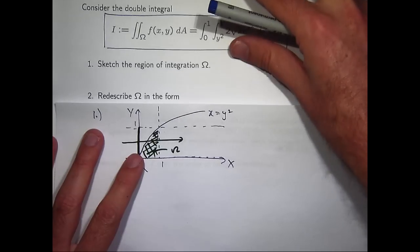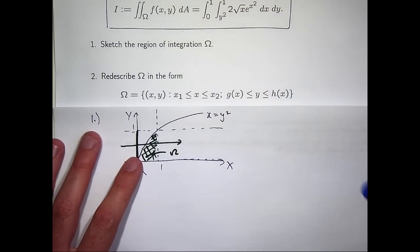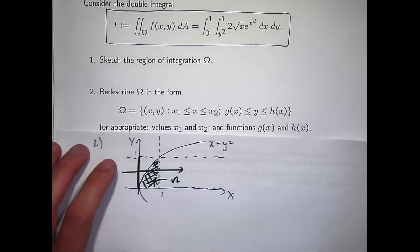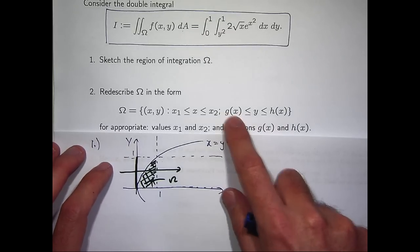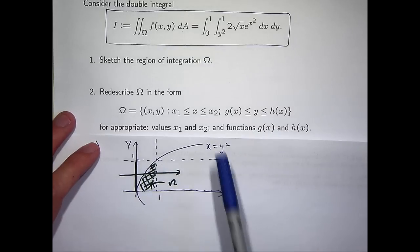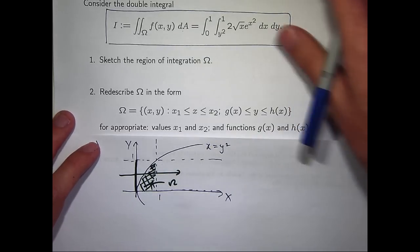So question two. Redescribe your region omega in the following form. Here, x1 and x2 are values and g of x and h of x are functions. So how do we do that? I'm going to draw the same diagram just with a little bit of relabeling.